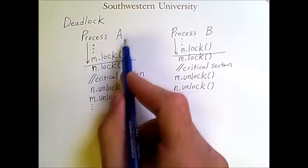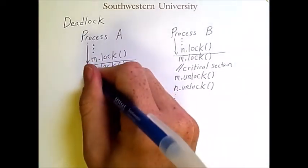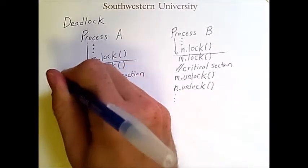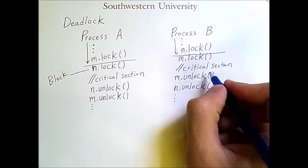If process A tries to lock mutex N, then this process will block because N has already been locked by process B.